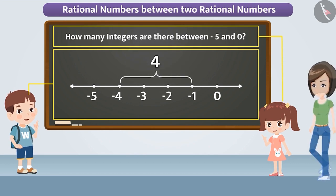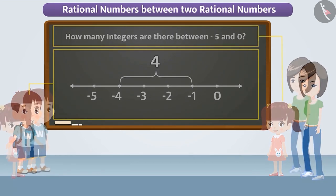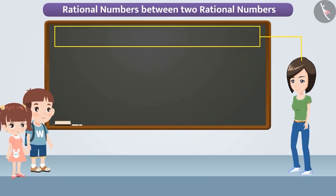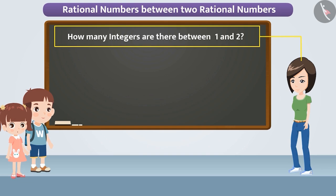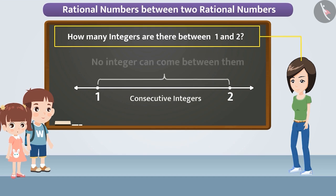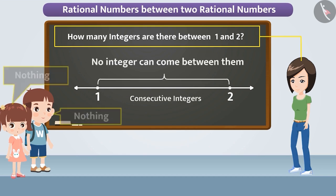Meanwhile, his elder sister Sarita came there. To make the game more interesting, she asked a question: how many integers are there between one and two? Amit and Nisha knew that one and two are consecutive integers, so no integer can come between them. Therefore, they replied nothing.